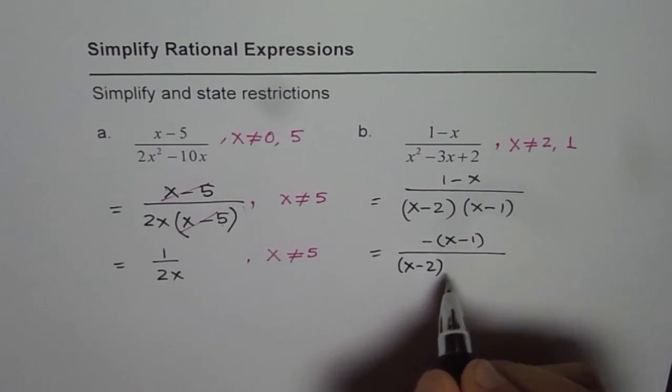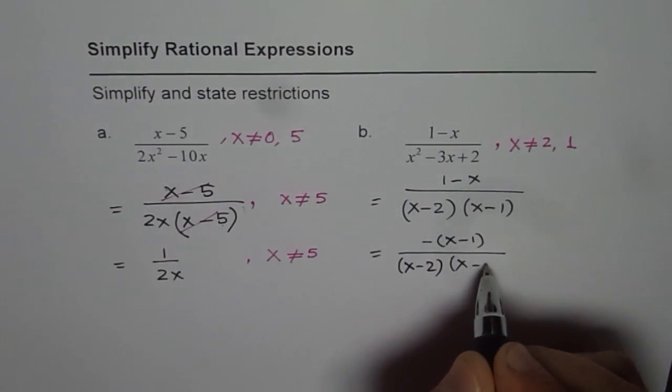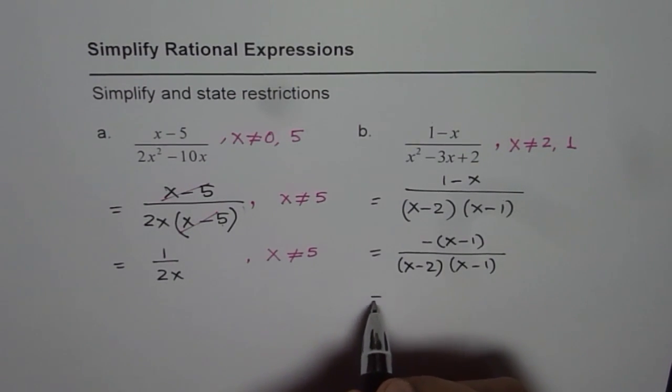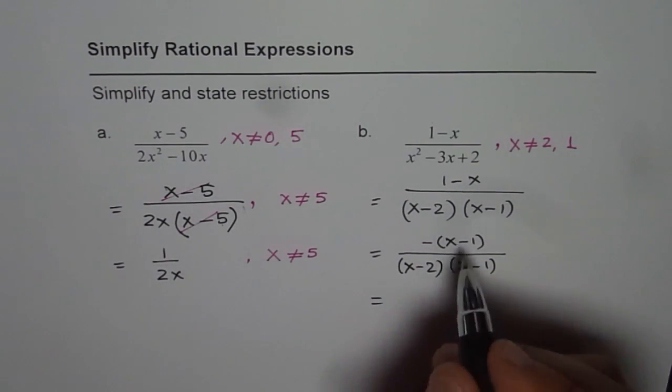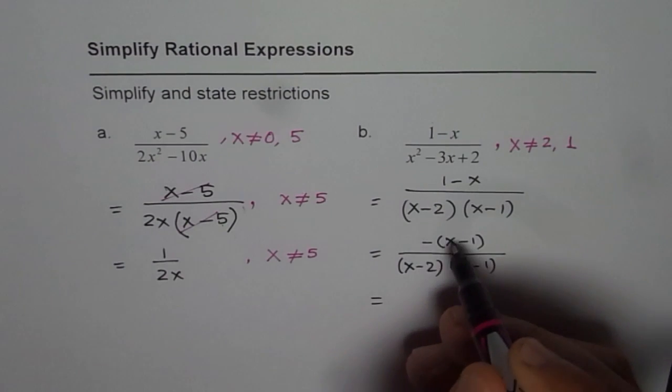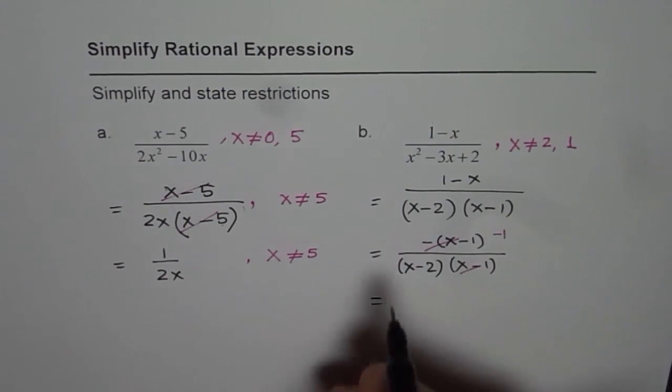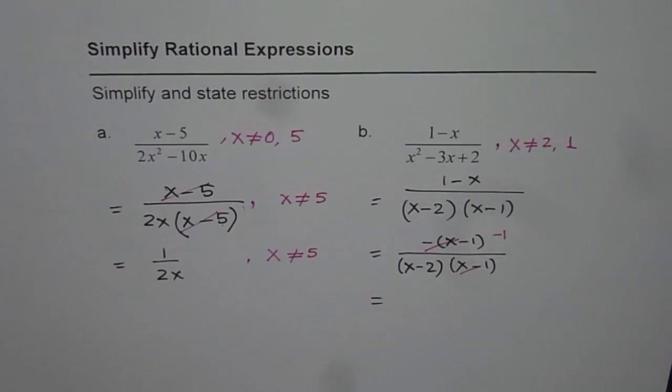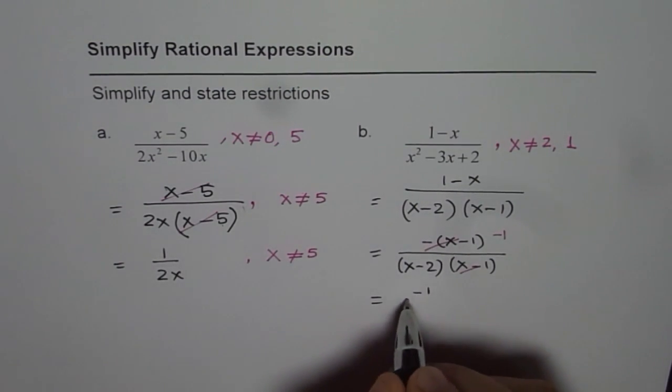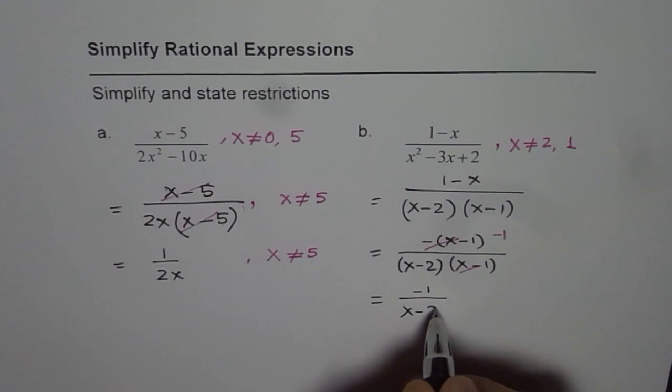Now, we get in the denominator x minus 2 times x minus 1. If you cancel, you get minus 1 in the numerator. It is minus 1 when you cancel this because of this negative sign. So you get minus 1 over x minus 2.